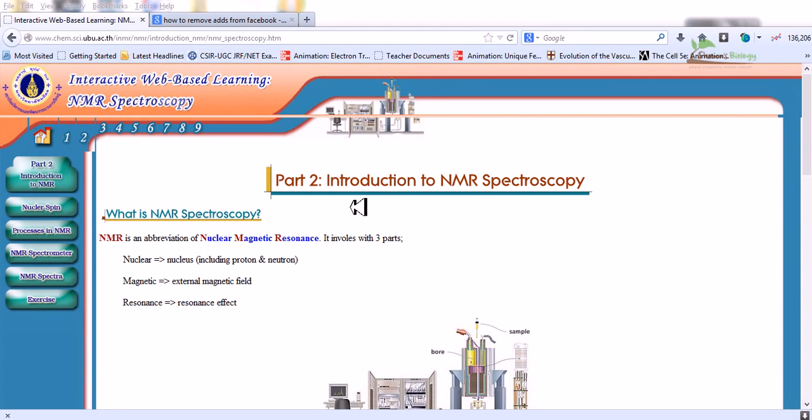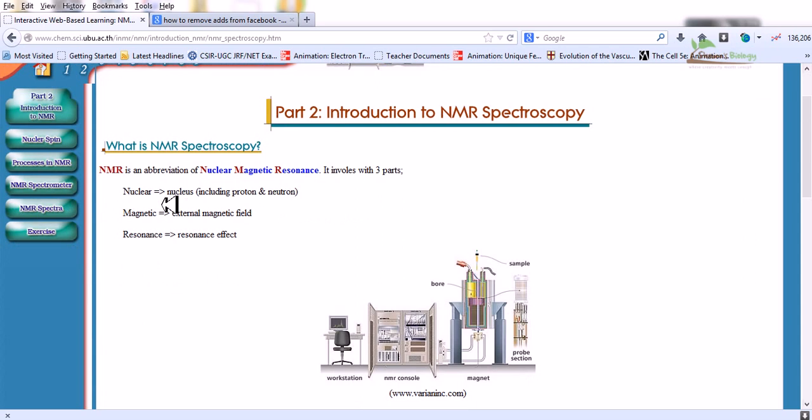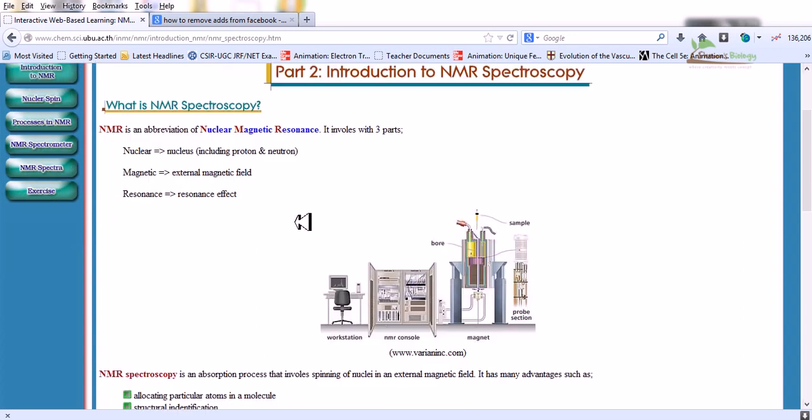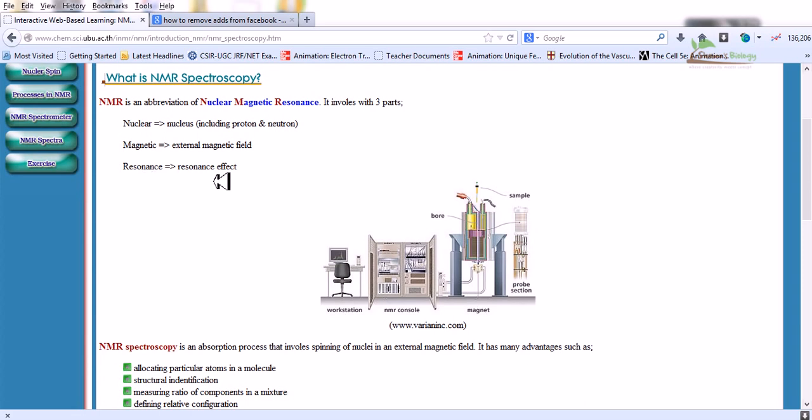Now what is NMR spectroscopy? NMR is an abbreviation of nuclear magnetic resonance. It involves three different parts. First one is the nucleus, which includes proton and neutron inside the nucleus of an atom. Second one is magnetic, meaning an external magnetic field must be applied. Third one is resonance, meaning the resonance effect at the atomic level.